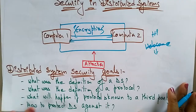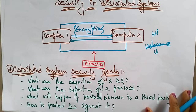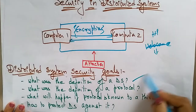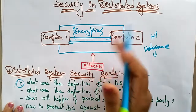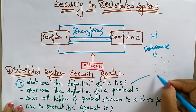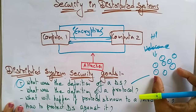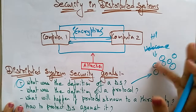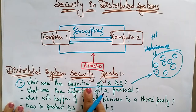These are the distributed system security goals. First of all, what are the goals of a distributed system to maintain security? The first goal is knowing the definition of a distributed system — understanding how the environment is set up and how the systems are arranged — because to maintain security to those systems and messages, you need to know the structure.